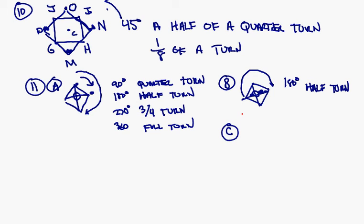And then you have C. B and C would have no rotational symmetry. The only thing you could do is turn all the way around a full turn in order for it to look like it landed on top of itself. No rotational symmetry. Okay. 12, 13, and 14. That was 11.